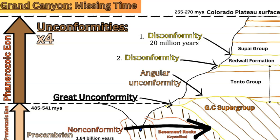Just below that is another disconformity between the Redwall Formation and the Tonto Group. The Tonto Group is a thicker layer of sedimentary rocks, and the Redwall limestone is about 340 million years old, while the top layer of the Tonto Group — called the Muav Limestone — is around 500 million years old. So there was a 150 to 160 million year disconformity between the Redwall and the Tonto Group, showing a long expanse of weathering and erosion.